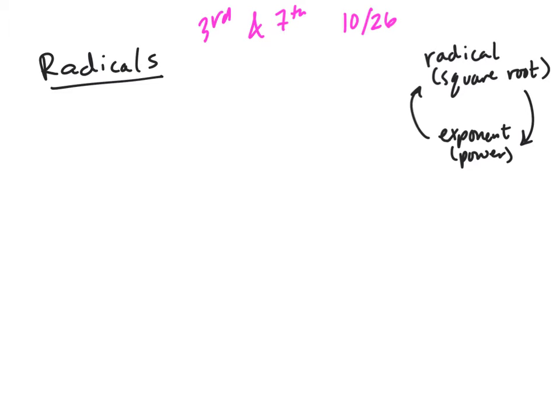So example one will do square root of x minus 4 plus 3 equals 4. Because this is math class, we're going to use SADMAP, and then today the E is like this exponent and radical.